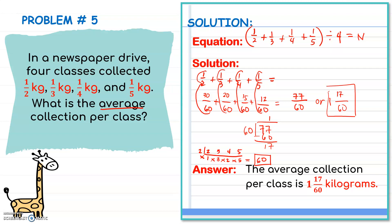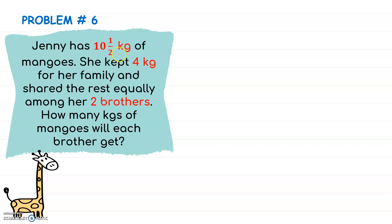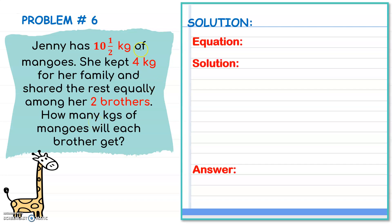Therefore, the average collection per class is one and seventeen-sixtieths kilograms. Now let's have our last example. Jenny has ten and one-half kilograms of mangoes. She kept four kilograms for her family and shared the rest equally among her two brothers. How many kilograms of mangoes will each brother receive? This problem involves two operations: subtraction, because she kept four kilograms, and then division to share the remainder equally among two brothers.